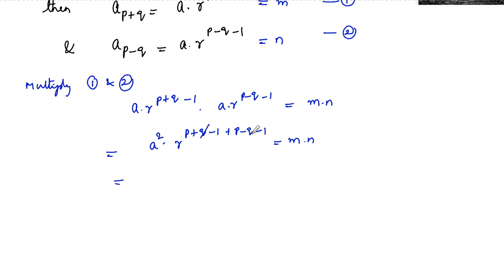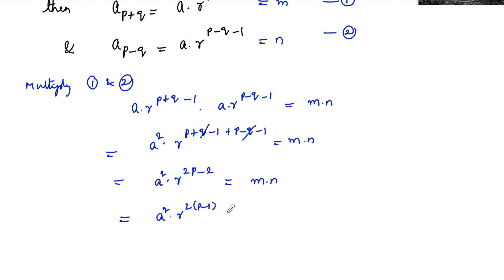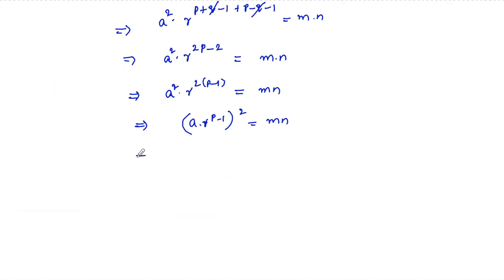The +q and −q cancel, giving a² · r^(2p-2) = mn, which is a² · r^(2(p-1)) = mn. This can be written as (a · r^(p-1))² = mn, so a · r^(p-1) = √(mn).